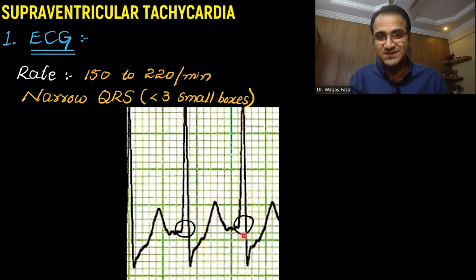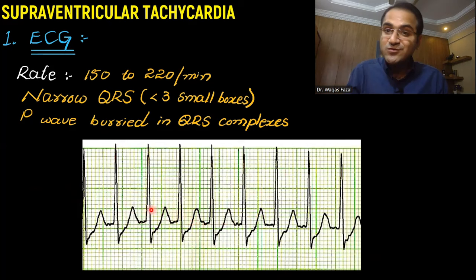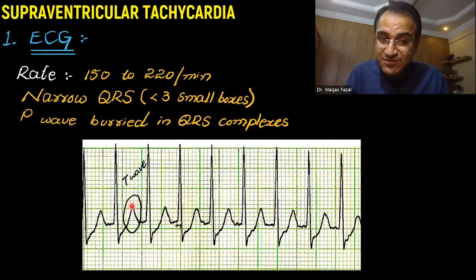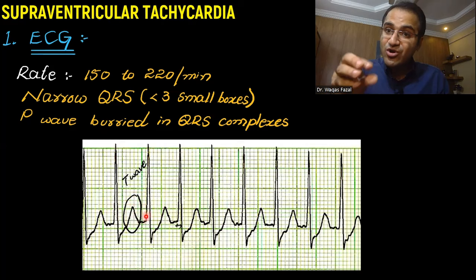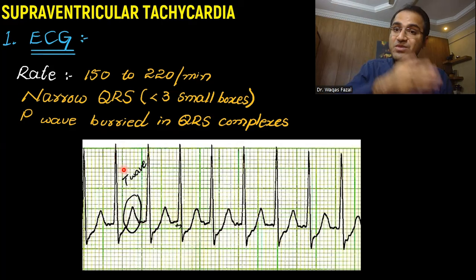The most important ECG finding in supraventricular tachycardia is that you won't be able to appreciate P waves — they are buried within the QRS complexes. There are just T waves visible. P waves are present but hidden because the QRS complexes are coming at such a fast pace that they are actually hiding the P waves.